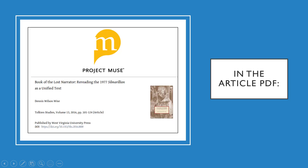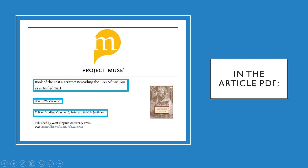The second way to find this information has to do with the article's PDF. Some PDFs come with a cover page, like this one here, for the article titled The Book of the Lost Narrator: Rereading the 1977 Silmarillion as a Unified Text. Once again, you're likely to find the author name, article title, and journal information in different places.